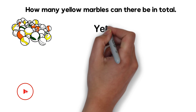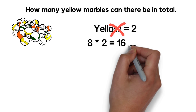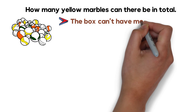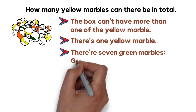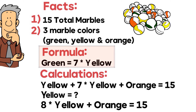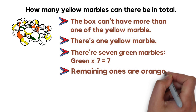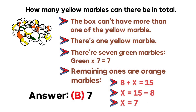If there is only one yellow marble, there are seven green marbles (7 × 1). Using the formula: 8 + x = 15, so x = 15 − 8 = 7. The correct answer is choice B: 7 orange marbles. Hopefully you've nailed this question and now know how to answer similar problems on the test.